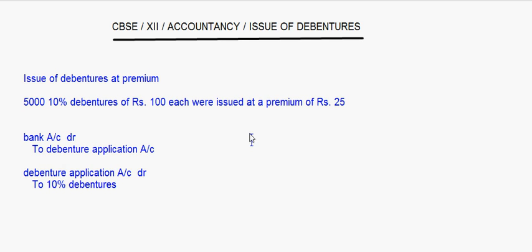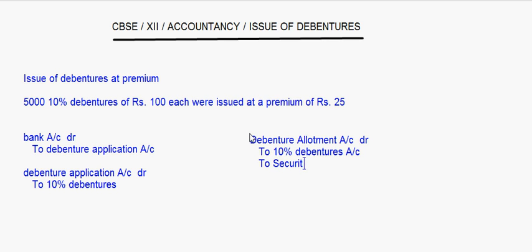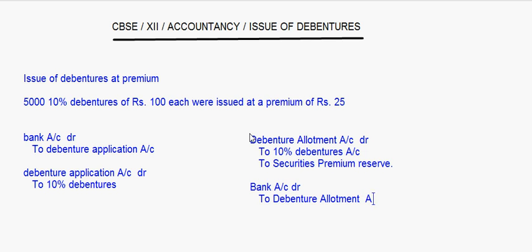Now let's come to the allotment. Assuming that the premium is charged along with the allotment, first you will have debenture allotment account debit to 10% debentures account and to securities premium reserve. This is the same way as we did in share capital. When we receive the money, it is bank account debit to debenture allotment. The entries for the first call and final call will be the same as done earlier.